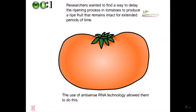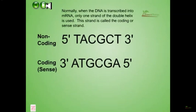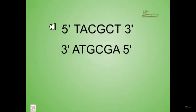Researchers wanted to find a way to delay the ripening process in tomatoes to produce a ripe fruit that remains intact for an extended period of time. The use of antisense RNA technology allowed them to do this. Normally, when DNA is transcribed into mRNA, only one strand of the double helix is used — the coding strand or sense strand. The opposite strand is called the antisense strand or non-coding strand.